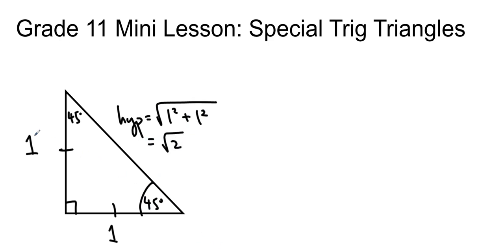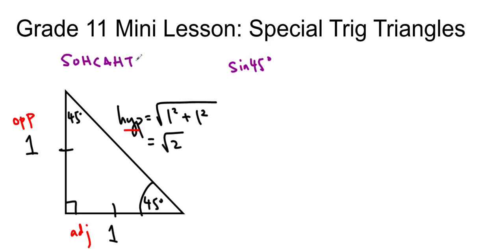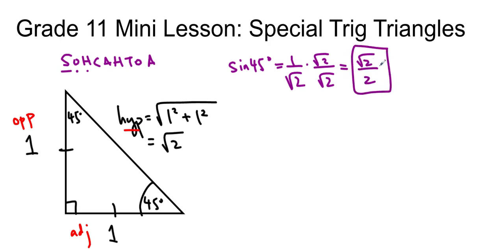Looking at this 45 degrees, its opposite is 1, its adjacent is also 1, and the hypotenuse is root 2. We're going to use this information to find the primary trig ratios. Sine 45 degrees, using SOHCAHTOA, is the opposite over the hypotenuse. The opposite is 1 and the hypotenuse is root 2, so it's 1 over root 2. We rationalize by multiplying by root 2 over root 2, which gives us root 2 over 2.